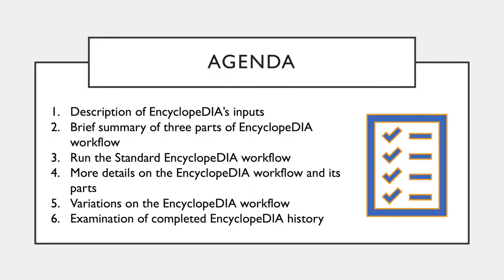Specifically in this presentation, I will give a brief explanation of the datasets and workflow before we run the Encyclopedia workflow. Then we will go into more detail on the different tools and parameters included in the workflow, as well as variations on this standard Encyclopedia workflow that you can use to tailor the workflow to your specific data. Lastly, we will go over the results of our workflow test, and I will give you a summary of the outputs generated and their results.